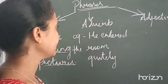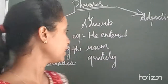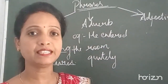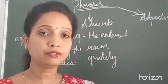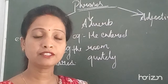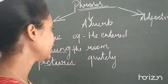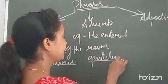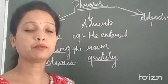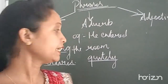He entered the room quietly — this is adverb of manner. Now here, you ask the question 'how he entered the room' — woh room mein kaise enter kiya? The answer is 'quietly' — he entered the room quietly. So here, 'quietly' becomes the adverb phrase, because it gives the answer to how he entered the room.